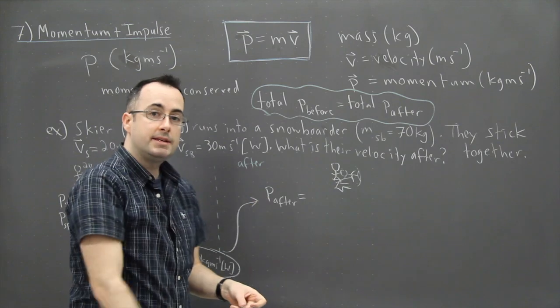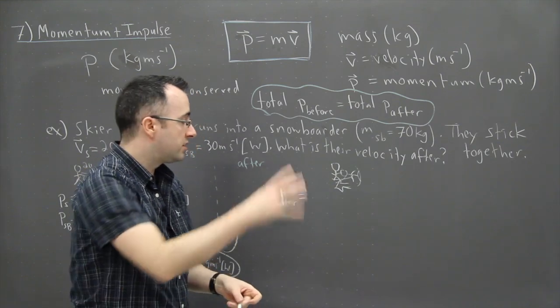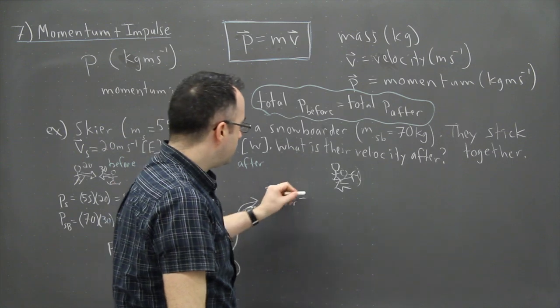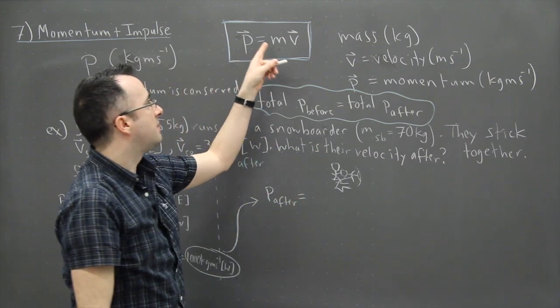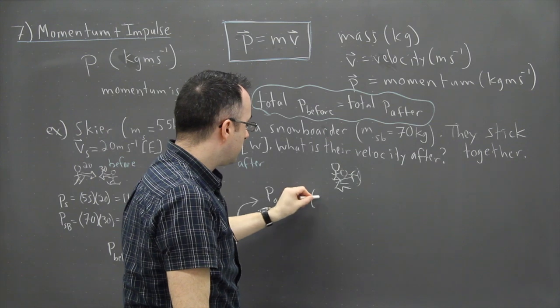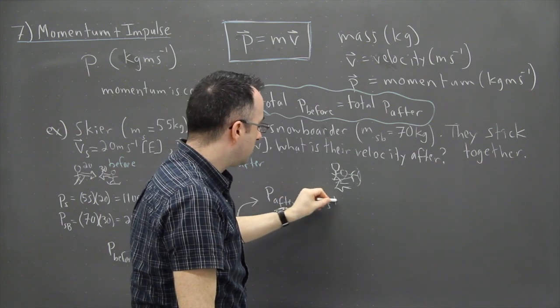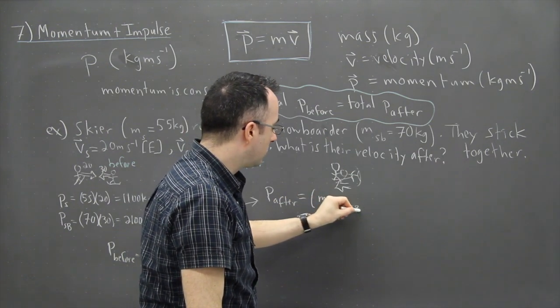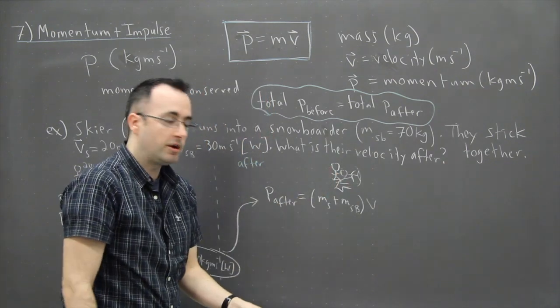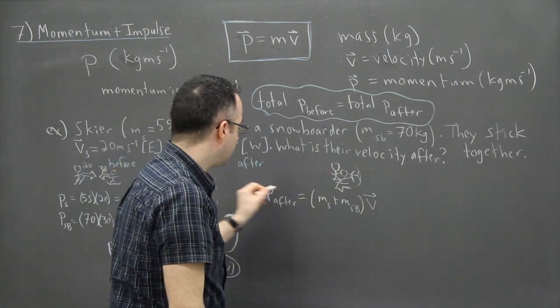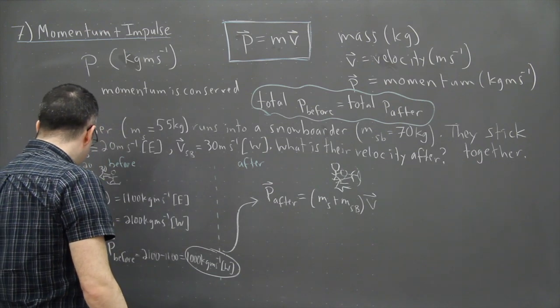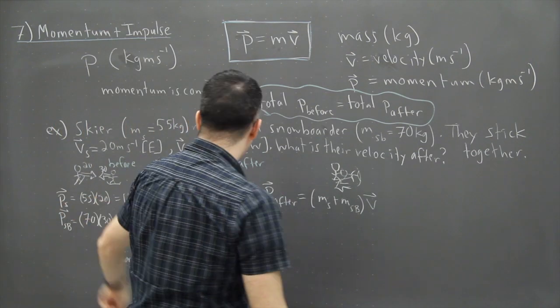Well afterwards, it's a nice easy situation because both of them are together. There's only one object. So that means then that, well, momentum is just mass times velocity. So in this case, the mass of them, it's going to be, well, mass of the skier plus mass of the snowboarder, because they're stuck together, times their final velocity. I should put a vector there. I should actually put vectors everywhere here for the momentums.